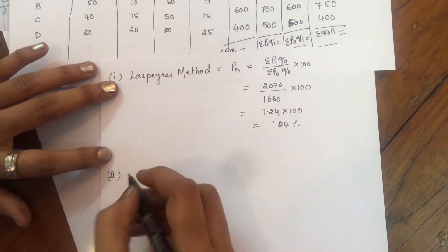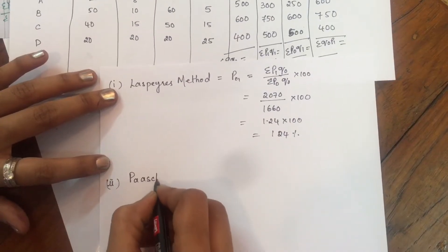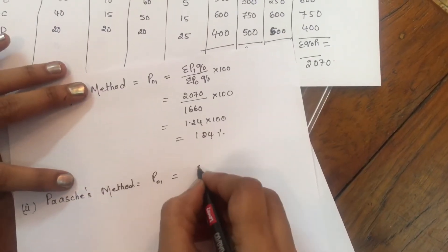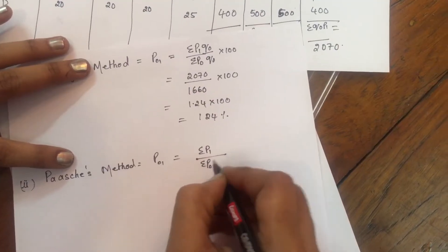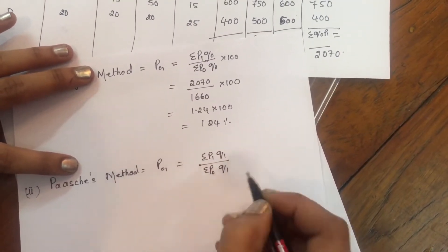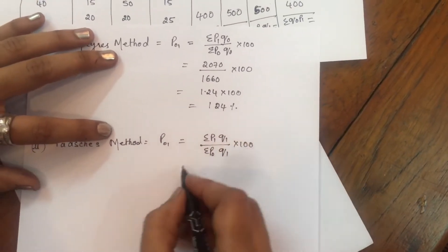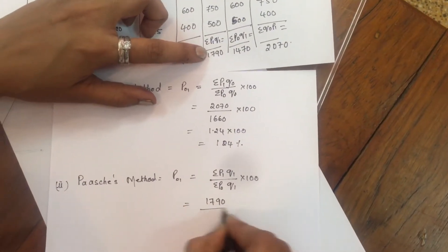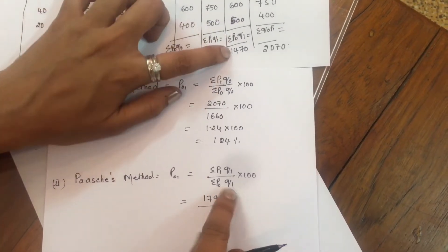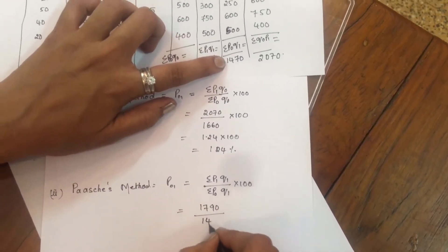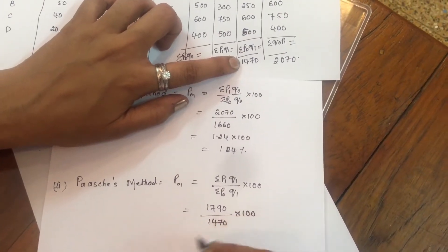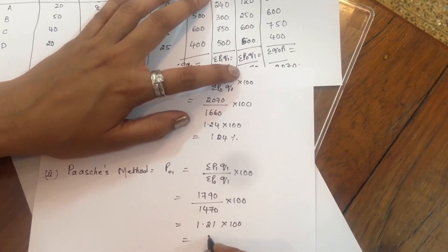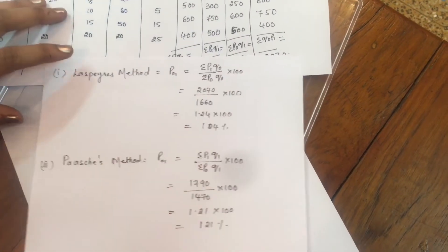Second one, Paasche's method. P01 equal to Sigma P1 Q1 by Sigma P0 Q1 into 100. P1 Q1 is 1790, P0 Q1 is 1470 into 100. Multiply, 1.21 into 100, 121%.